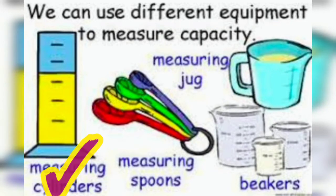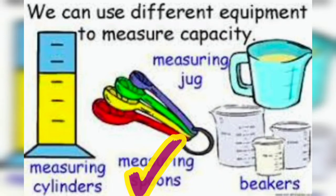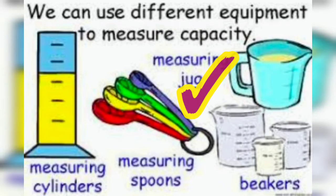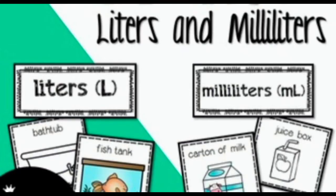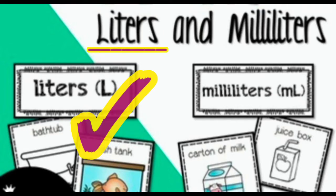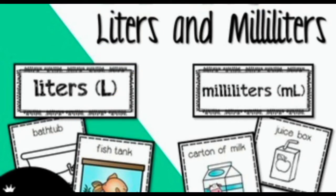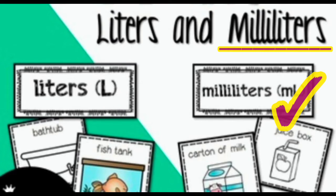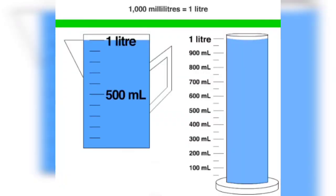To measure it, we use different kinds of measuring instruments like measuring cylinders, measuring spoons, measuring jugs, beakers, etc. The basic unit to measure the capacity of any container is litre. We denote the litre by letter L.